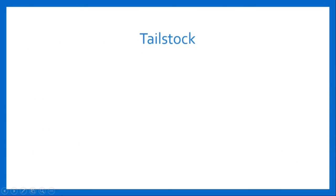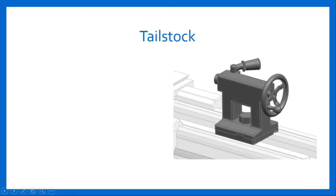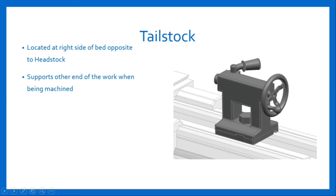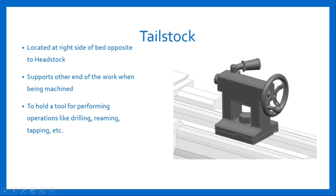The fourth major component of Lett Machine is tailstock. Here is a figure of tailstock. A tailstock is located at the right side of bed opposite to headstock. The basic function of tailstock is to support the other end of the work when being machined, and to hold a tool for performing operations like drilling, reaming, taping, etc.